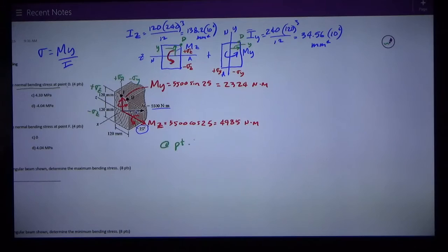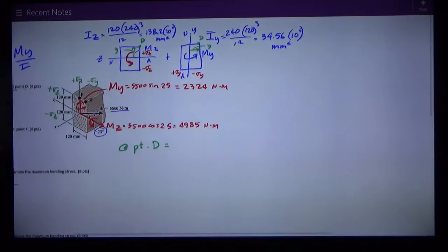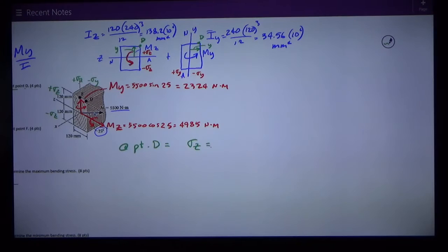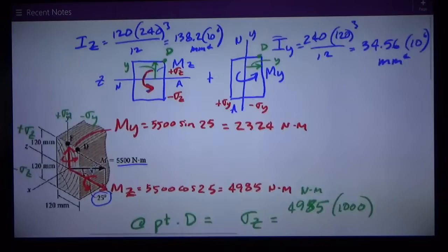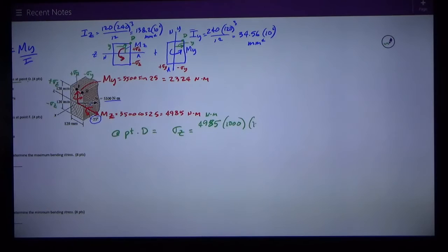I plug it into the formulas. At point D, σz is M which is 4985, in newton meters, and I'm going to multiply by a thousand. For the z axis bending that distance y is 120. And I'm using Iz which is 138.2 × 10⁶. That works out to be 4.327 megapascals.